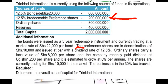Next we move to irredeemable preference shares, with an amount of 200 million. In the additional information, preference shares are in denominations of 10,000 shillings and issued at par, so the market value is 10,000, with a dividend rate of 12.5 percent. We shall use that information to calculate the specific cost of irredeemable preference shares.